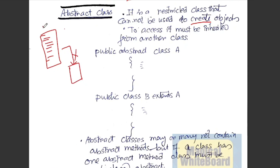Then we will hide the objects. The abstract class is a restricted class that cannot be used to create objects. To access it, it must be inherited from another class. When we want to access it, it must be inherited.